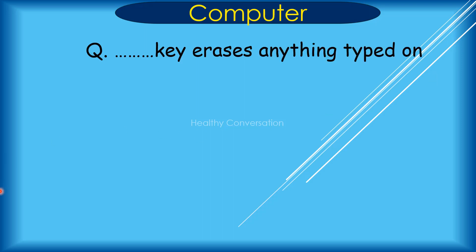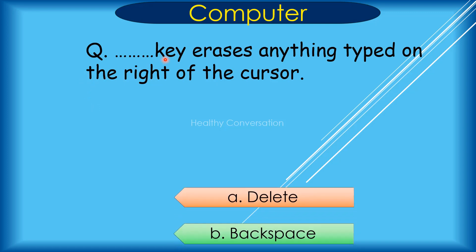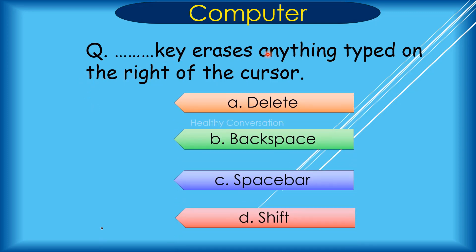Question: Dash key deletes anything typed on the right of the cursor. A. Delete, B. Backspace, C. Space Bar, D. Shift. Correct answer is A. Delete.